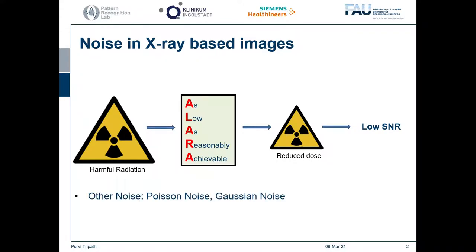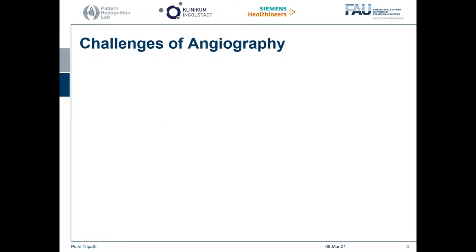The other noise present in X-ray based images is Poisson noise, which is due to the fluctuation of photon flow, and Gaussian noise generated due to the interference of detector electronics. Though there are several techniques proven to effectively reduce these noises, there are some challenges while denoising angiographic images.